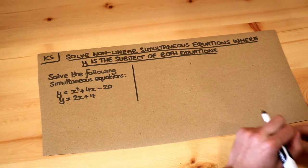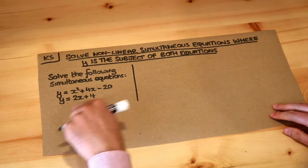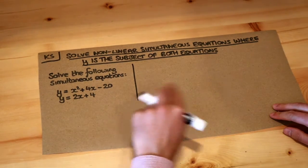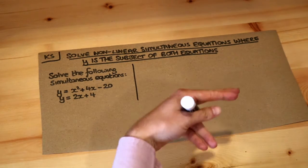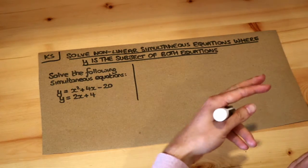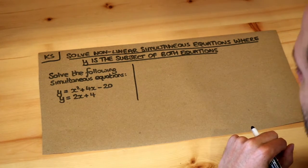We've previously seen how to solve simultaneous equations where we have something x but something y called something, and we have two equations like that. Remember we use elimination - we can either add the equations together or subtract the equations to either make the x's or y's cancel.